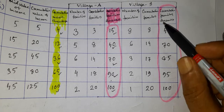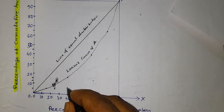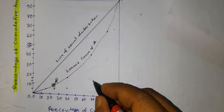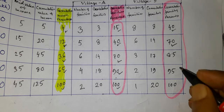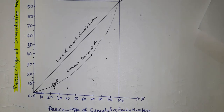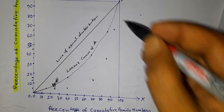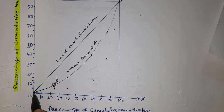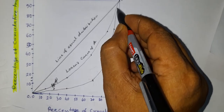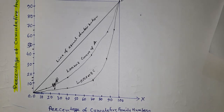Now for the distribution of village B, we plot the coordinates: (40, 4), then (70, 12), then (85, 36), then (95, 65), and finally (100, 100). We join these points with a smooth curve. This is the Lorentz curve for the distribution of village B.